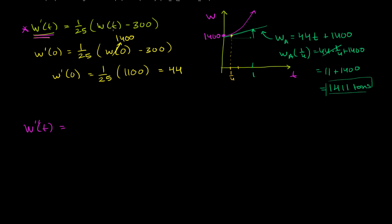The right-hand side is the same thing as (1/25)w(t) minus 12. When you take the derivative, that constant part drops off and you're left with (1/25) times the derivative of w(t). So we get (1/25) times dw/dt. This is the second derivative in terms of the first derivative.